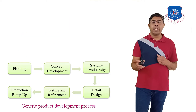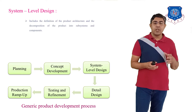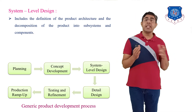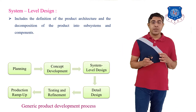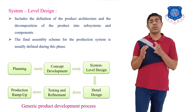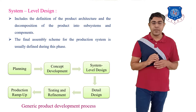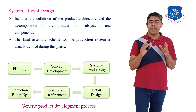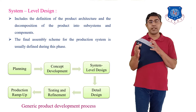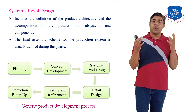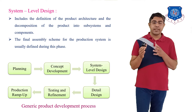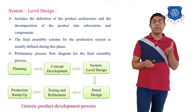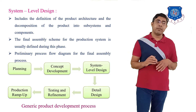After concept development, the next is System Level Design. System level design includes the definition of product architecture and decomposition of the product into subassemblies and parts. The final assembly scheme for the product system is usually defined during this phase. A preliminary process flow diagram for the final assembly process is also done at this stage.